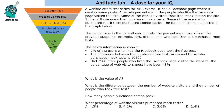Hello everyone, welcome to Aptitude Jab. This is a set based on a funnel graph. A website offers test series for MBA exams and has a Facebook page where it creates posts. Certain people who visited the Facebook page then visited the site, and from the site some took a free test, some purchased a mock test, and some purchased the combo pack.